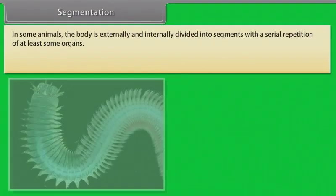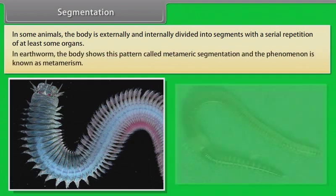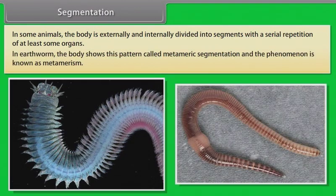Segmentation: In some animals, the body is externally and internally divided into segments with a serial repetition of at least some organs. In earthworm, the body shows this pattern called metameric segmentation, and the phenomenon is known as metamerism.